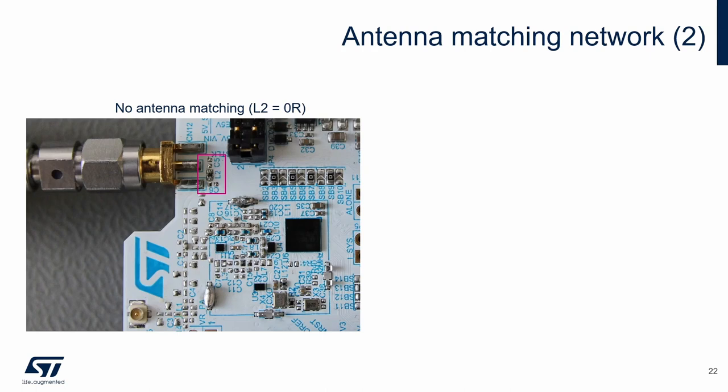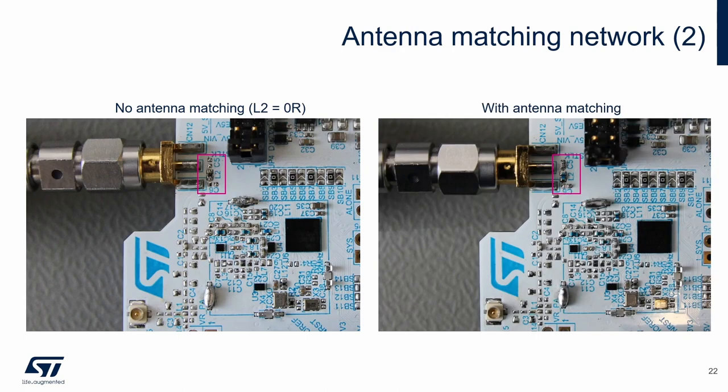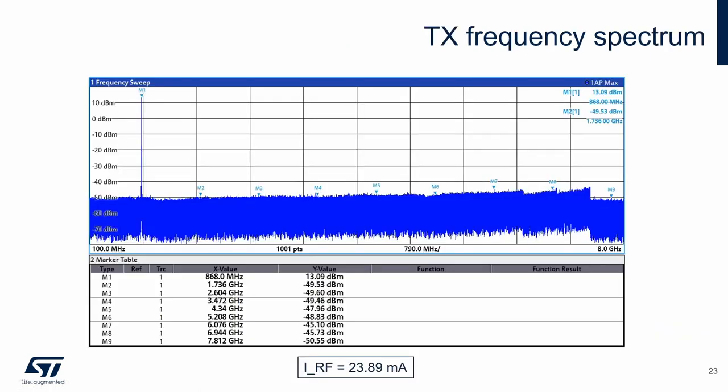Up to now, measurements were made with the antenna matching network bypassed using a serial 0 ohm resistor and empty parallel capacitor positions. Now the calculated values of the antenna matching network have been fitted. Here is the final measurement with the antenna matching network. The higher harmonics were attenuated and we have better margin to the certification limit. The fundamental harmonic has decreased a bit — the final value is about 13.09 dBm. The current has decreased slightly as well. If needed, the antenna matching network or transmitter part can be fine-tuned again for better results. For our example, these results are acceptable.